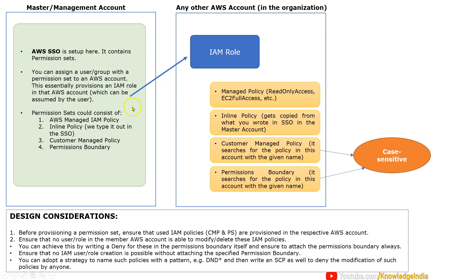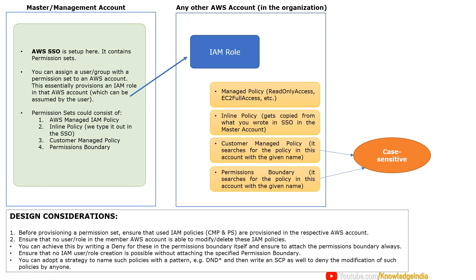When you press provision in AWS SSO, on the right-hand side in the member account, an IAM role gets created. If you have a managed IAM policy, the same managed IAM policy gets attached to this IAM role. If you check the ARN of a managed IAM policy, you will see that managed IAM policy ARNs do not have an account ID — because the managed policies are managed by AWS, they are not specific to a particular account. So read-only access has the same content in your master account, member account, or any other account.